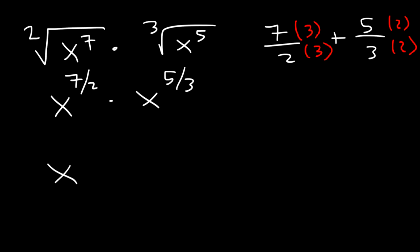So 7 over 2 is equivalent to 21 over 6. And 5 over 3 is equivalent to 10 over 6. And now 21 plus 10 is 31. So right now we can convert this to its radical form. We can write like this. Or we can simplify it further.